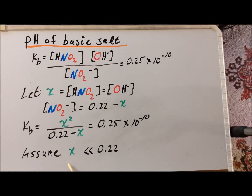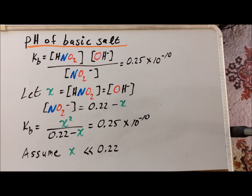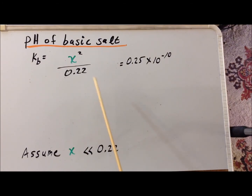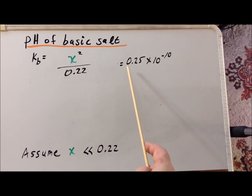Next, we assume that X is small compared to 0.22, so we can simplify the denominator of this fraction as simply 0.22. This saves us the difficulty of having to solve a quadratic equation. Later, once we determine a value for X, we will double check to make sure that this was a valid assumption. This reduces our problem to X squared divided by 0.22 equals 0.25 times 10 to the minus 10, and we want to solve for X.